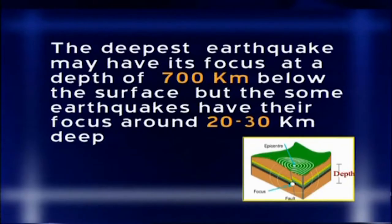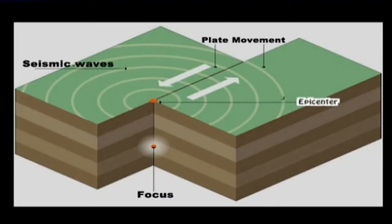The deepest earthquake may have its focus at a depth of about 700 kilometers below the surface of the earth. However, some earthquakes have their focus around 20 to 30 kilometers deep — most earthquakes belong to this shallow-focused category. The place on the ground surface perpendicular to the focus that records seismic waves for the first time is called the epicenter.